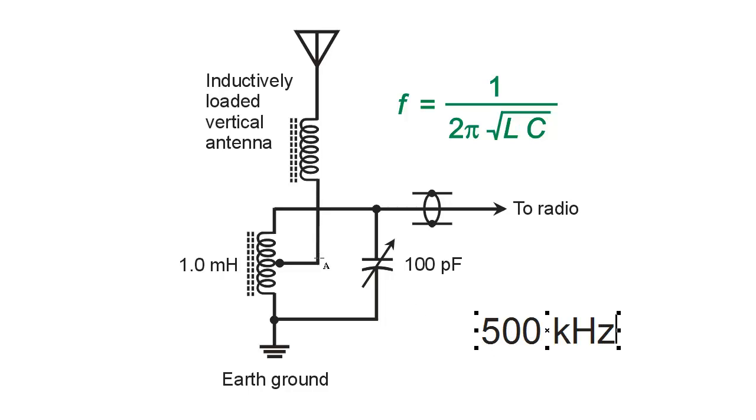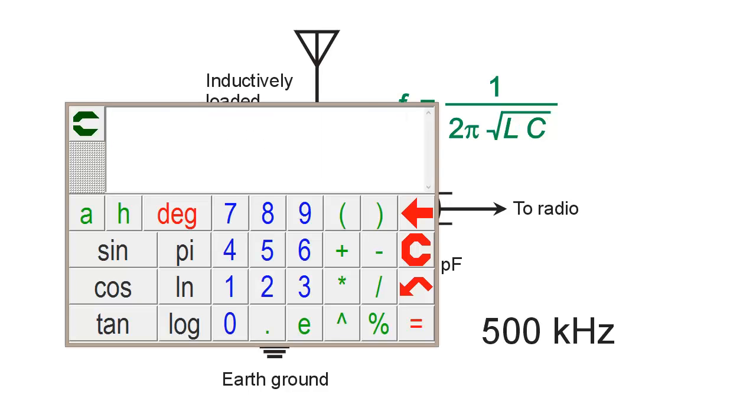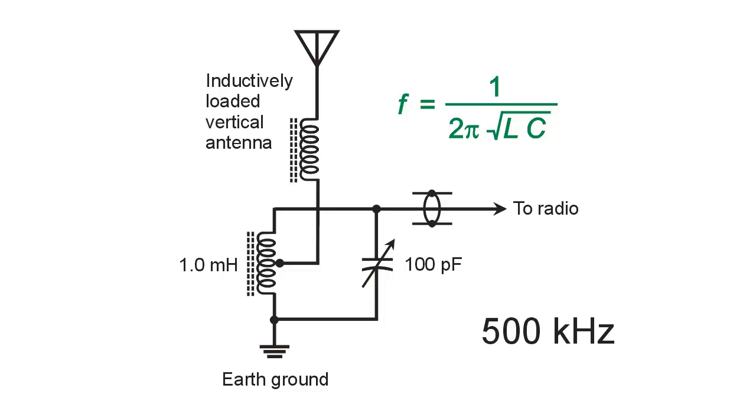If you take the familiar formula for a dipole antenna, 467 divided by the frequency in megahertz for a half wave dipole, let's just try that calculation. 467 divided by 0.5, that's a 934 foot length for a dipole antenna. You can divide that by 2, you're a little over 450 feet for a full size quarter wave vertical antenna. Well, I don't think you're going to do that.